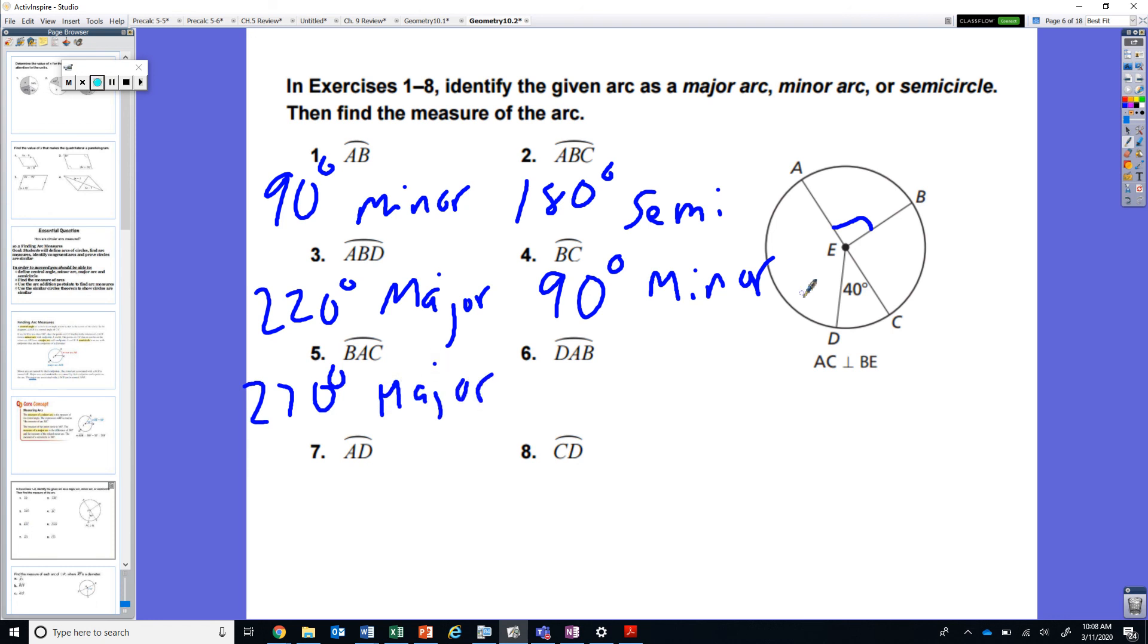And then we have angle DAB. So from here we have D to A to B. Remember A to C was 180. So 180 minus 40 gives that this angle here would be 140. So 140 plus our 90 is going to be 230 degrees as a major arc.